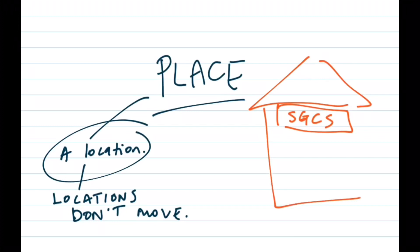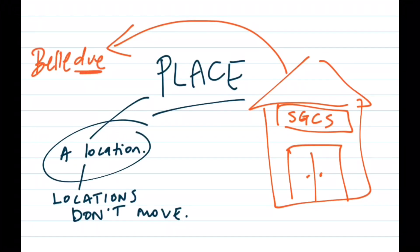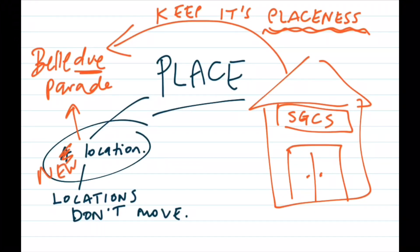However, a place like a school can move. This is pretty unlikely. But let's say tomorrow, we bought a property on Bellevue Parade instead of Bellevue Parade. And we decided we're going to move the school. It's possible. And in doing so, even if the school moved its location, it would keep its placeness as St. George Christian School. It would still be called St. George Christian School. It would still retain a student body and all the things that we know about the school. It would still be on Google Maps as St. George Christian School. Just the address will have changed.